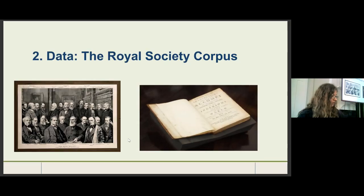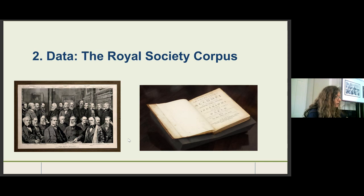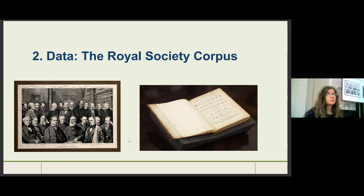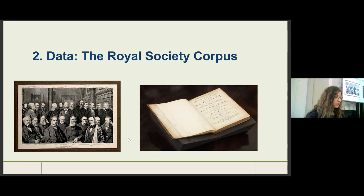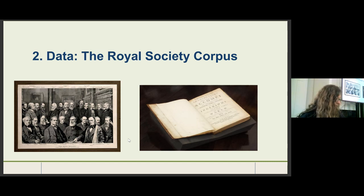The data I will use is the Royal Society Corpus, built in Saarbrücken over several years in a subproject of a collaborative research center on information density and linguistic encoding. At the previous conference on historical medical discourse, we already presented this data and explained how to identify texts with medical implications from the 1770s to the 1920s in this corpus.